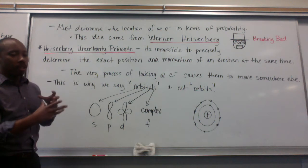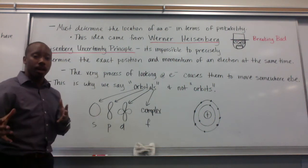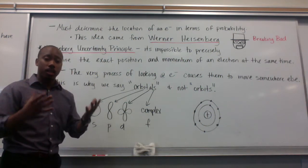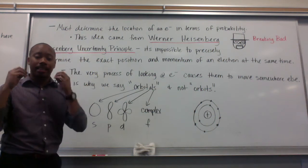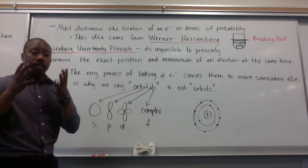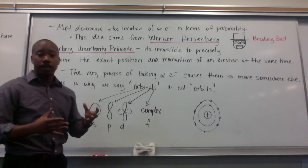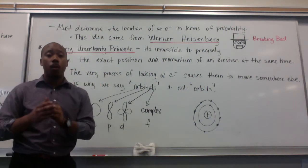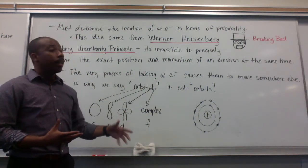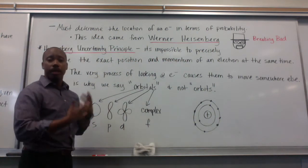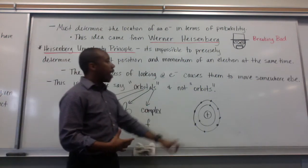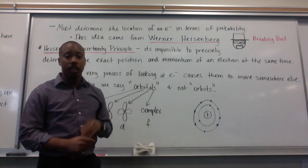It says that it's impossible to precisely determine the exact position and momentum of an electron at the same time. The very process of looking at an electron causes it to move somewhere else — in order to look at an electron, light must hit it, and that light gives energy to the electron, causing it to move. So we can't observe its exact position and know how fast it's moving simultaneously. From Breaking Bad, Heisenberg got his name because the character was impossible to precisely locate — he was an elusive character.